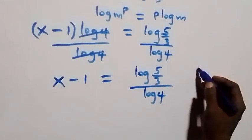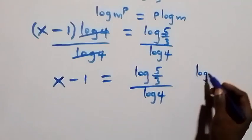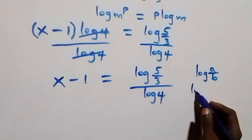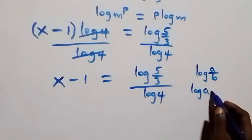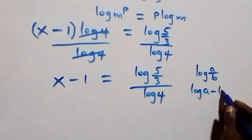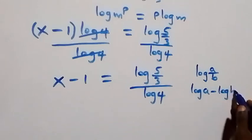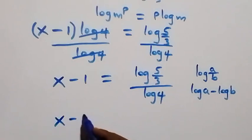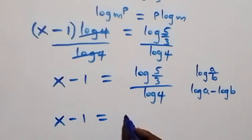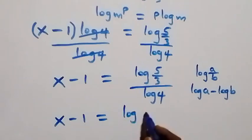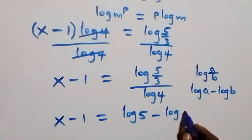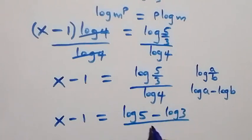We can use the rule log(a/b) equals log a minus log b to separate this. So we now have x minus one equals to log 5 minus log 3, all over log 4.